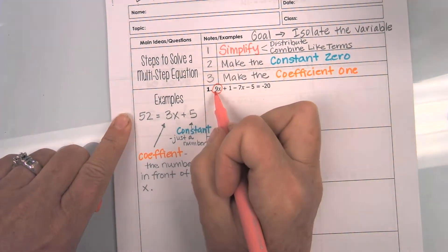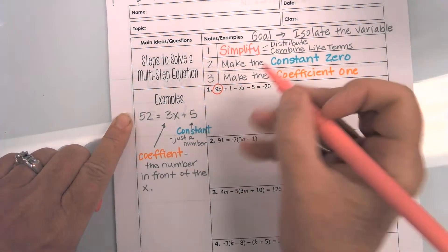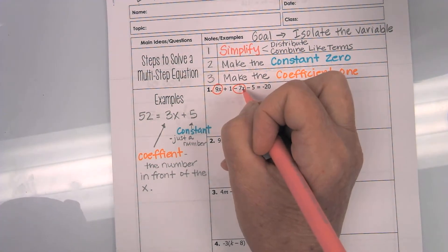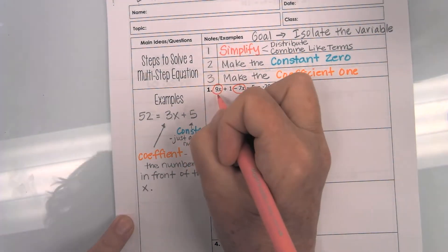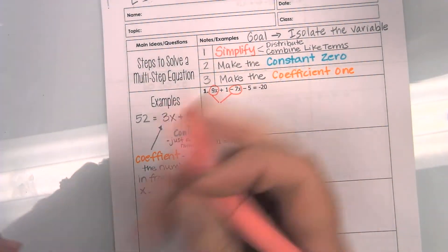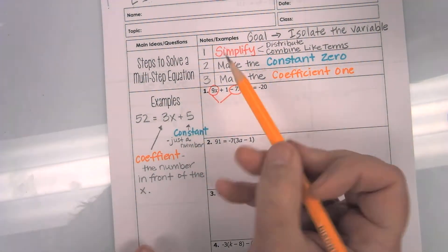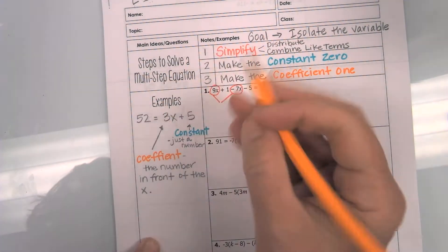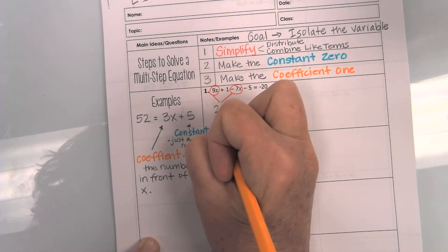Notice I have a positive 9x, and I have a negative 7x. Since those both have the x value, I can bring them together. And when I bring them together, I have a positive 9, which means I go right 9, and then I have a negative 7. So, I come back to the left. It leaves me with 2x.